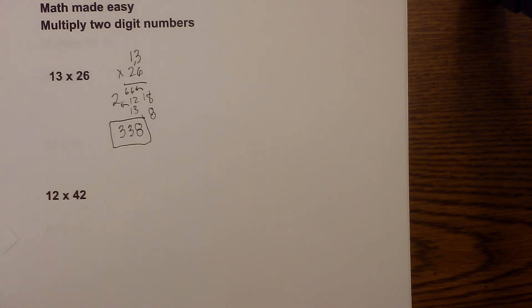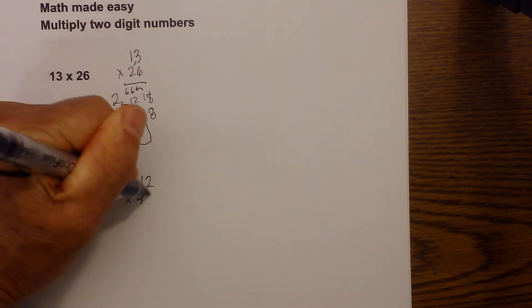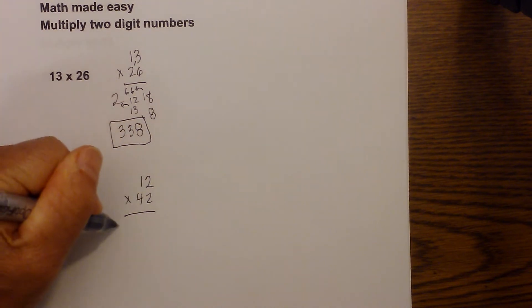Now I will speed up the pace a little bit and you'll see that it actually is quite easy when you multiply numbers using this trick. 12 times 42, 4 times 1 is 4.